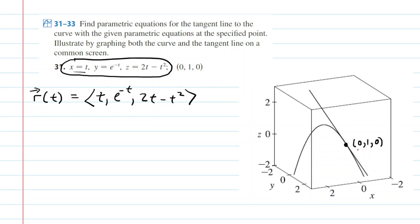Now, at a particular point, whose coordinates are shown, (0, 1, 0), we have ourselves a tangent line. Now that tangent line is going to be parallel to a tangent vector. And the tangent vector is symbolized by r prime of t.